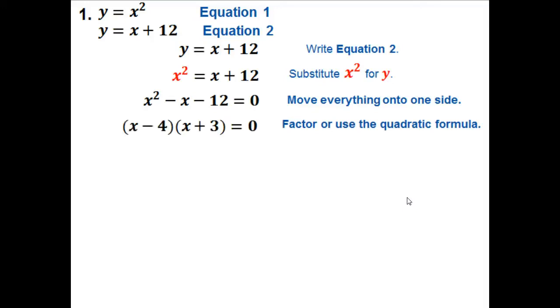To factor this, two numbers that multiply to give -12 but add to give -1 are -4 and +3. So we get (x - 4)(x + 3) = 0. Now I need to set each factor equal to 0 and solve them. That gives us x = 4 and x = -3.